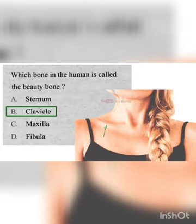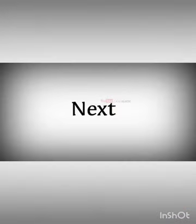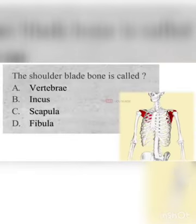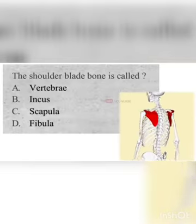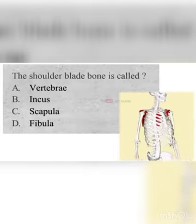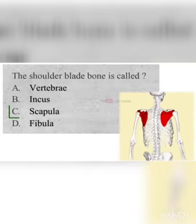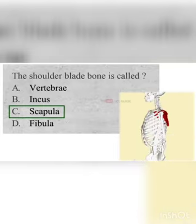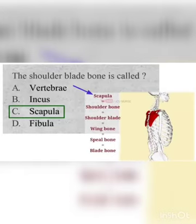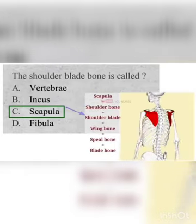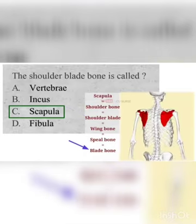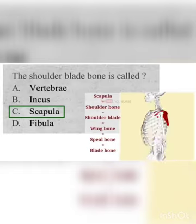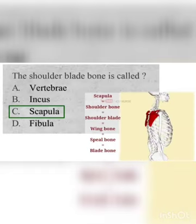It is the bone located just above the chest. The shoulder blade bone is called: A. Vertebra, B. Incus, C. Scapula, D. Fibula. The correct answer is C. Scapula. The shoulder blade is called the scapula, also known as shoulder bone, shoulder blade, wing bone, or blade bone. The scapula is the bone that connects the humerus with the clavicle.